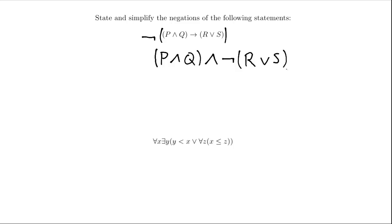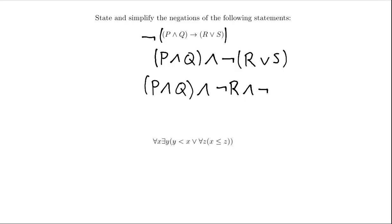We can simplify this a little further. P and Q — that's fine, we'll leave that as P and Q. The 'and' is good, but we can distribute the negation past this disjunction — past this 'or' — and to do that we use De Morgan's Law. So not (R or S) becomes not R and not S. And there's the negation of the given statement.